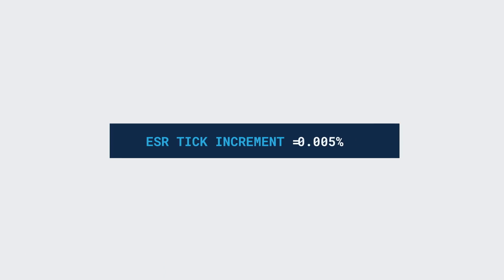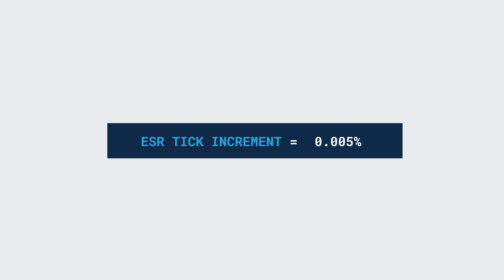Most Ester outright contracts have a tick increment of one-half of a basis point, but this changes as the contract nears expiration.